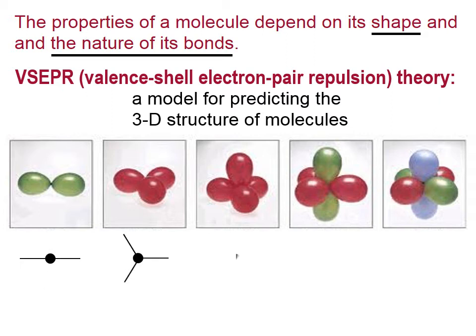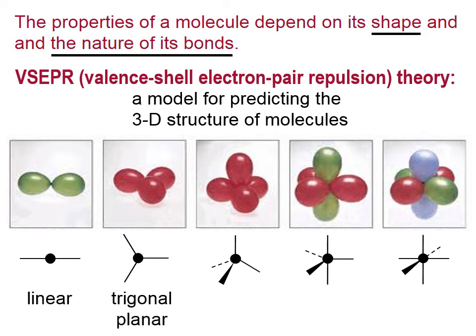I represent these different three-dimensional shapes with stick figures. These five shapes all have names that you are going to have to memorize at some point. The one on the left we call linear. The next one is called trigonal planar. In other words, all of these atoms are in a plane. The next one is tetrahedral. That's an easy one.